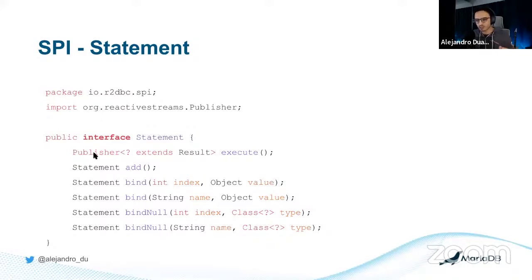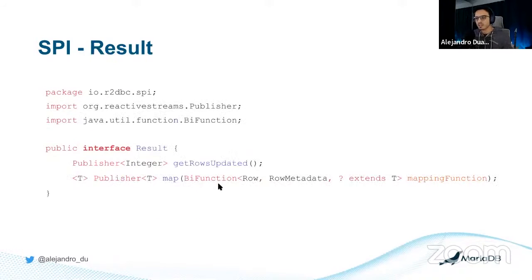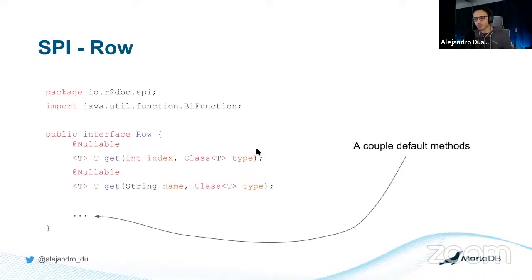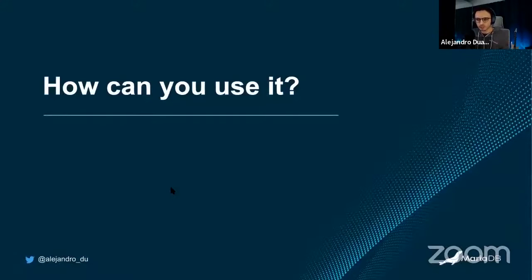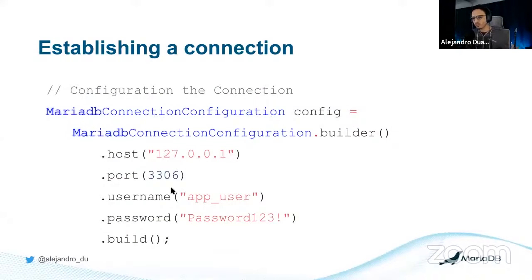Once you have the Connection, you can begin and commit transactions, create a Statement with SQL, and close the connection. The Statement's execute() method also returns a Publisher — not the query result directly, but a Publisher from which you can get the results in the future without blocking. To pass parameters to SQL queries, you use bind() — I find that even nicer than JDBC. The Result has a map() method returning a Publisher, and you get Row items allowing you to get column values by index or by column name.